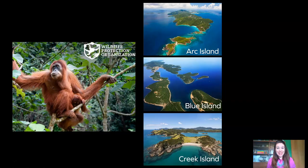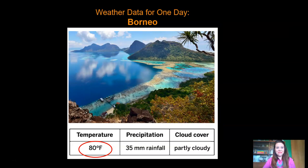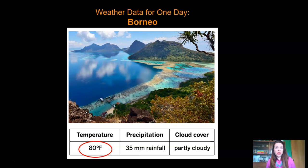We're working with the Wildlife Protection Organization to look for the perfect place to put an orangutan reserve. We're trying to compare weather data from these three islands to decide which place would be the hottest, rainiest, best place to put the orangutans. Remember that orangutans only live on two islands in the whole world, Borneo and Sumatra? Let's check out the weather data for one day on Borneo.